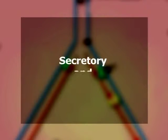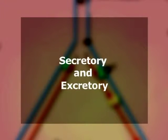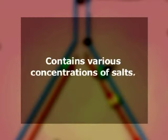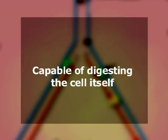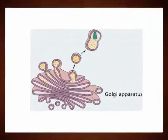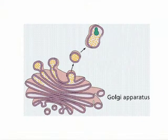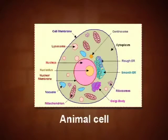Cell sap contains different compounds, some of which are secretory and some are excretory in nature. The vacuole also contains various concentrations of salts, sugars, and different kinds of soluble pigments. This cell sap also contains various enzymes that are even capable of digesting the cell itself. These vacuoles arise initially in young dividing cells, probably by progressive fusion of vesicles derived from the Golgi apparatus. They are structurally and functionally related to lysosomes in animal cells.